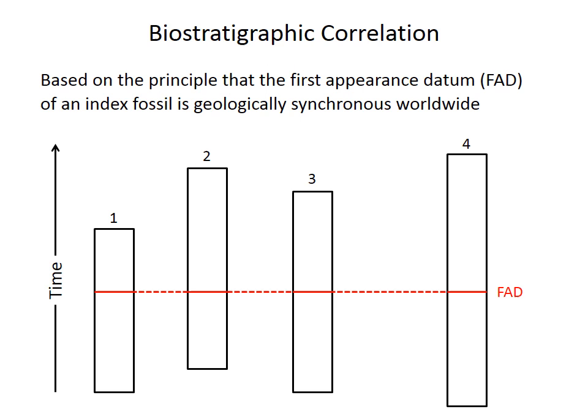Subdivision of the geological timescale is an important outcome of biostratigraphy, but correlation of events between different regions is perhaps a more important goal. For example, it can aid in exploration for petroleum or mineral deposits of a known age in one region. By looking in another region at rocks of a similar age, you'll be able to find those resources.